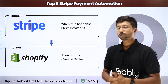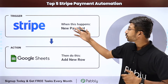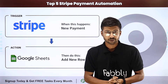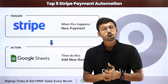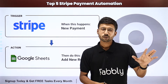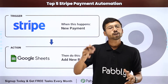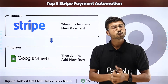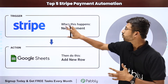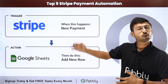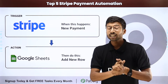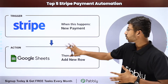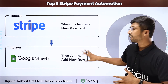Moving ahead to the third automation, and that is Stripe to Google Sheet. Tracking your online payments is very important. If you want to track all of your Stripe payments into a Google Sheet so that you can maintain a record and track them later, using this automation, whenever you receive a new payment on your Stripe account, those payment details will instantly and automatically be stored in your Google Sheet as a new row.